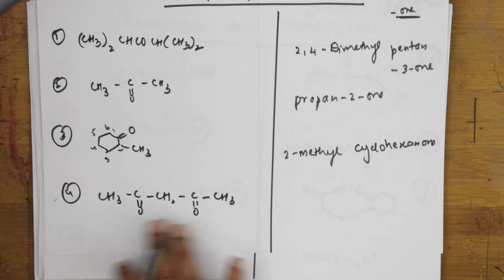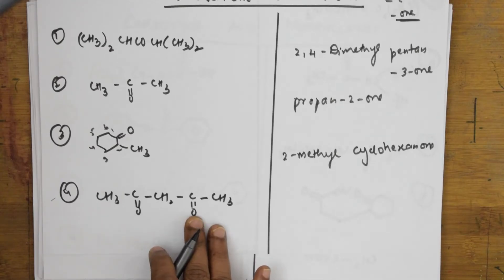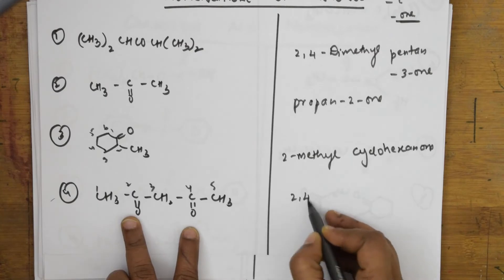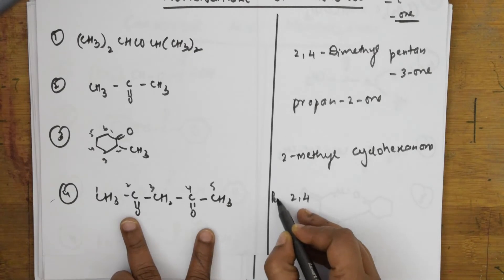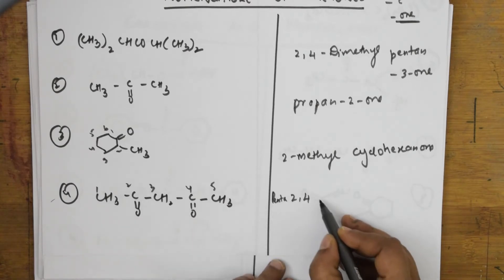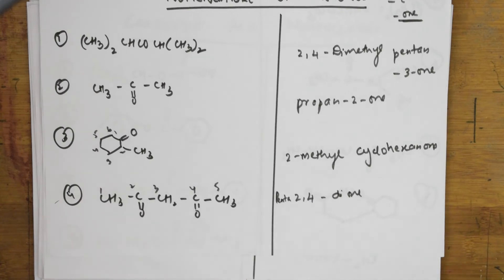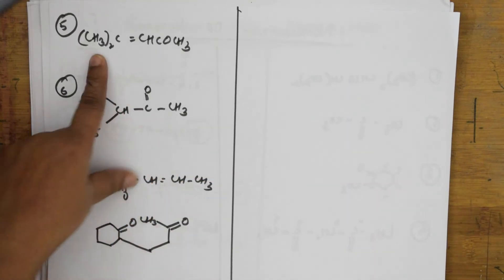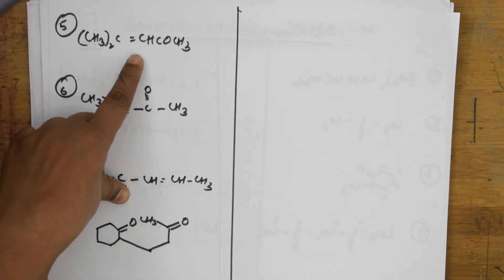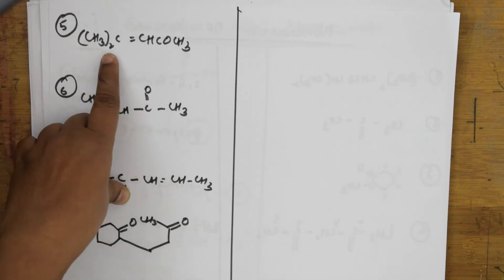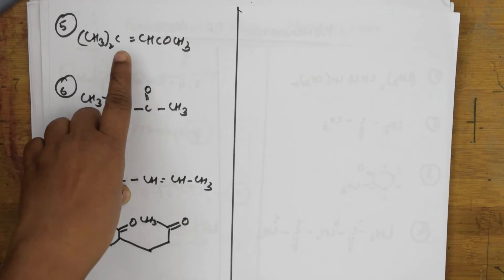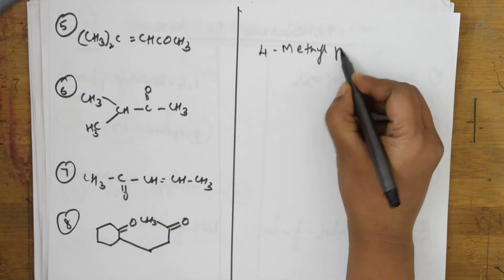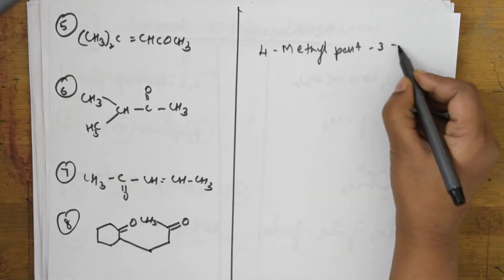The methyl group is at position two, so this is 2-methylcyclohexanone. Now let us name this compound — both are ketonic groups. Number one, two, three, four, five — the second carbon and the fourth carbon have ketone groups, so we have diones: penta-2,4-dione. Remember penta means five carbon atoms, and two ketonic groups means dione.